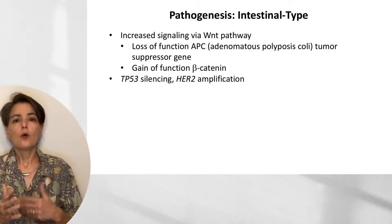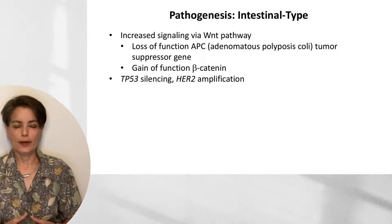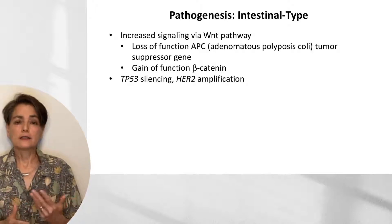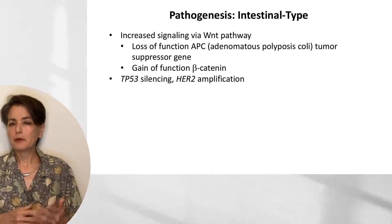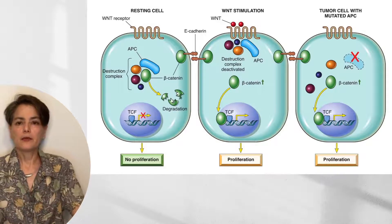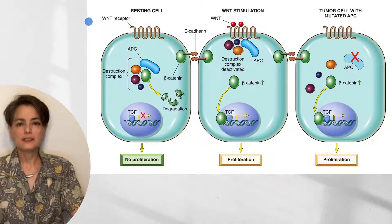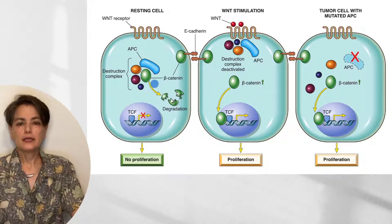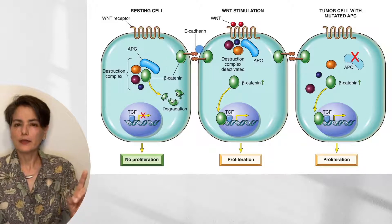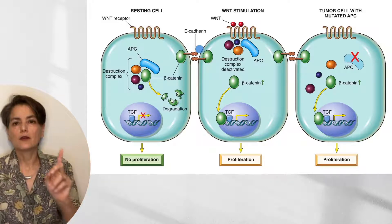The pathogenesis begins with increased signaling via the Wnt pathway, occurring through either loss of function of the APC tumor suppressor gene or gain of function of beta-catenin. Other findings include TP53 silencing and HER2 amplification. In the resting cell, APC joins with the destruction complex and degrades beta-catenin, preventing it from entering the nucleus and transcribing proliferative genes. Beta-catenin also binds to E-cadherin — relevant because E-cadherin loss is central to diffuse-type adenocarcinoma rather than intestinal type.